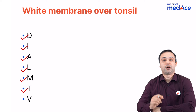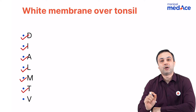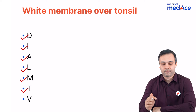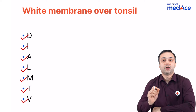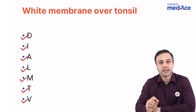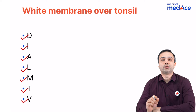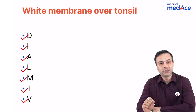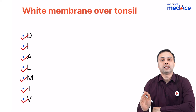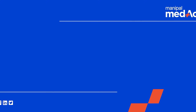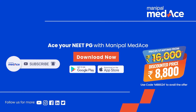T stands for trauma or tumor, and V stands for Vincent's angina, also known as trench mouth or ulcerative gingivitis. So these are the major diseases that can present with a membrane over the tonsil.